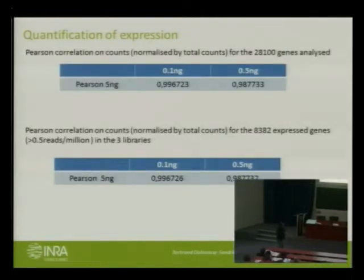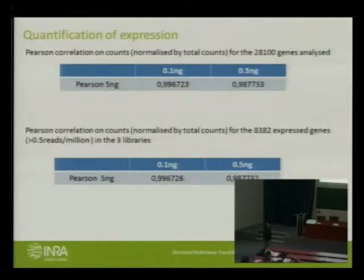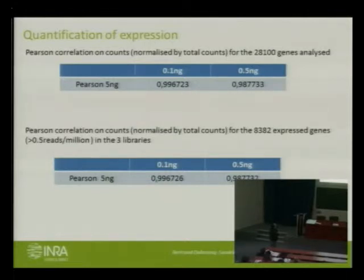What about quantification of expression? When you make a Pearson correlation on counts between the 5 nanograms and the 0.1 and 0.5 nanogram libraries, the correlations are good. When you compare the most expressed genes, the correlation is once again very nice. So at this point, we were very confident and we liked very much doing this experiment — we can detect genes and apparently the quantification is nice.